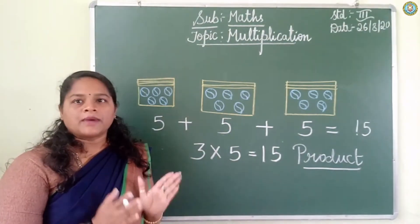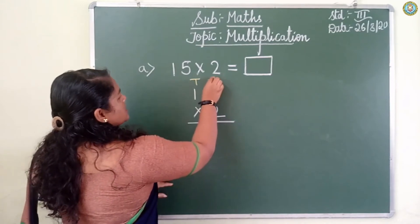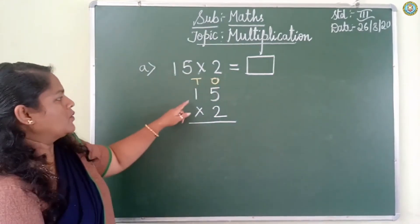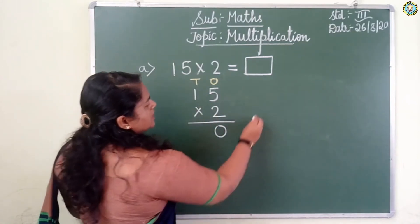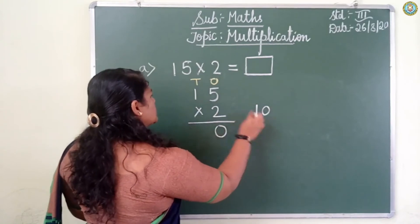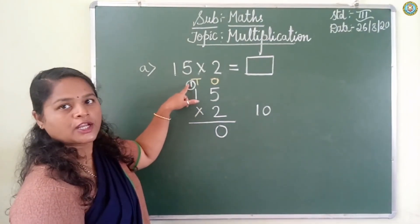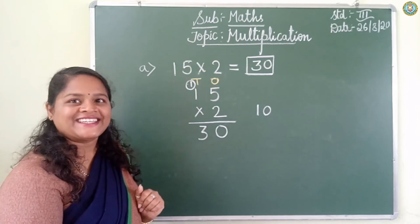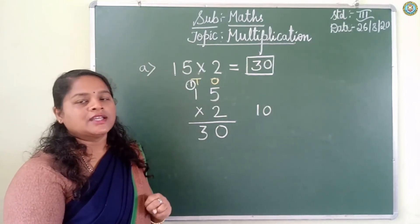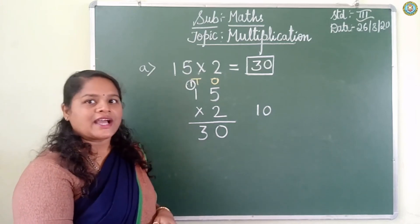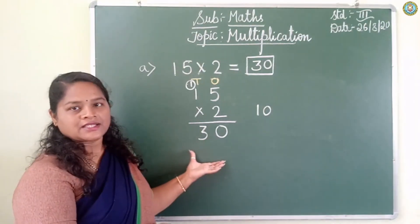Got it children? From 1 to 15, you are going to learn the tables. You have to learn the tables. Only if you learn the tables will you be able to do multiplication. Got it? Now let us move on to multiplication. Multiplication is nothing but repeated addition. What is that? Multiplication is repeated addition.